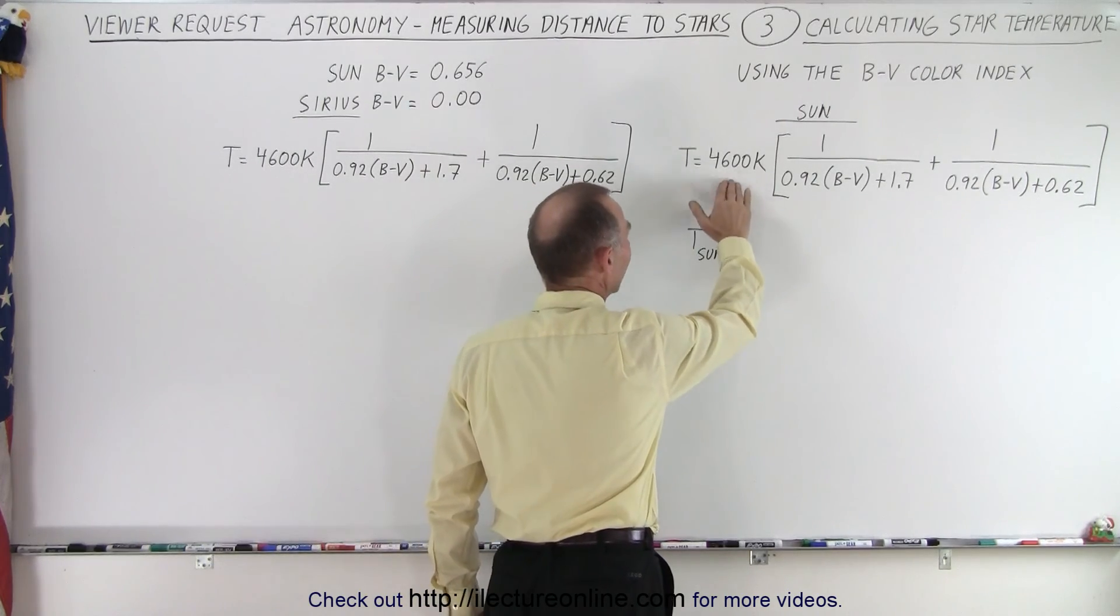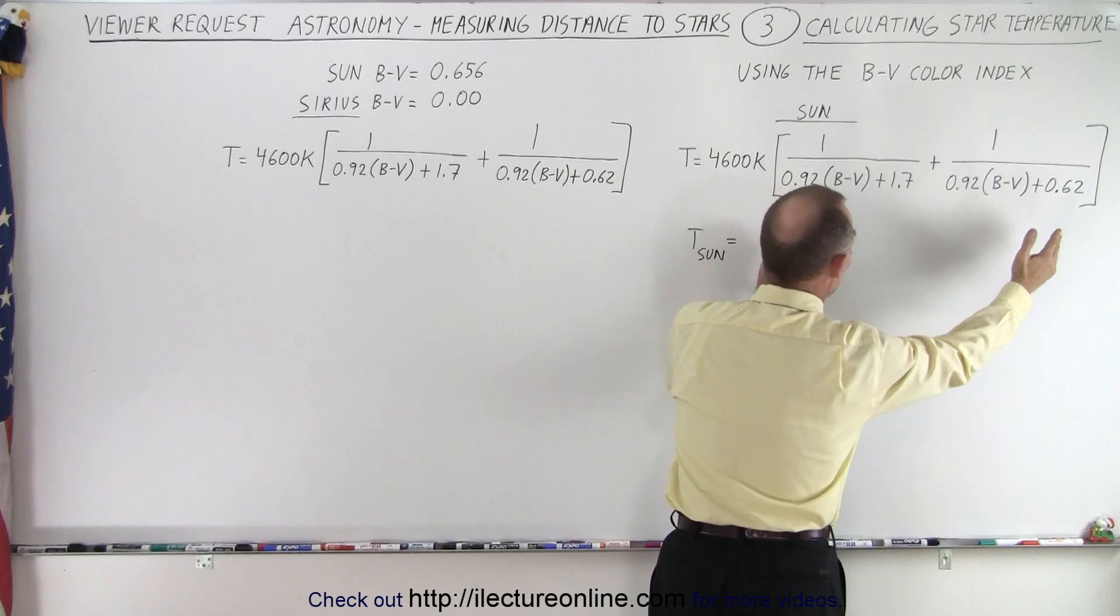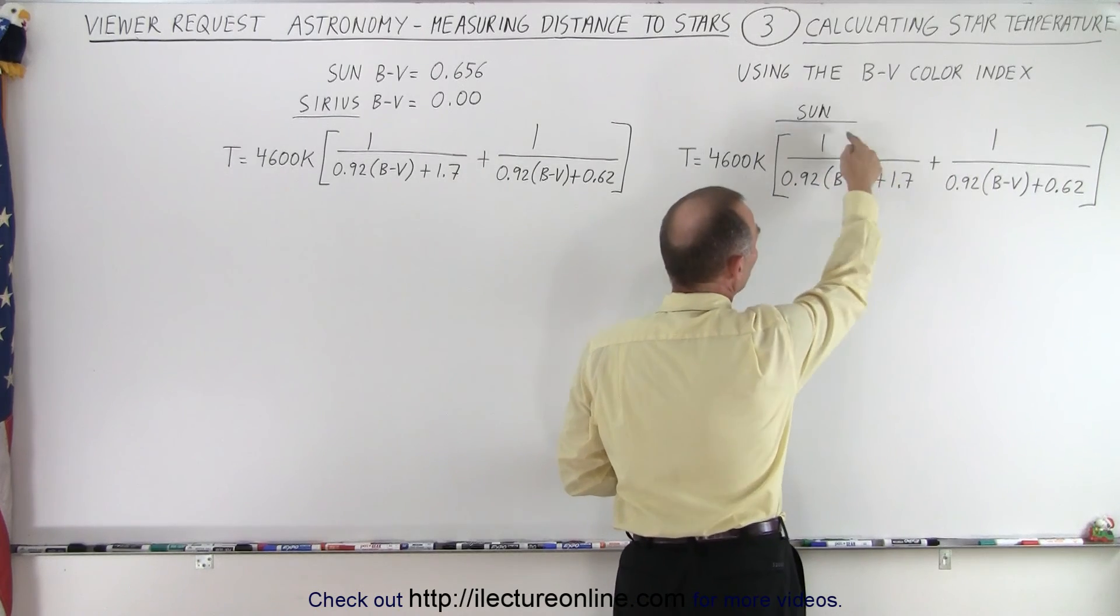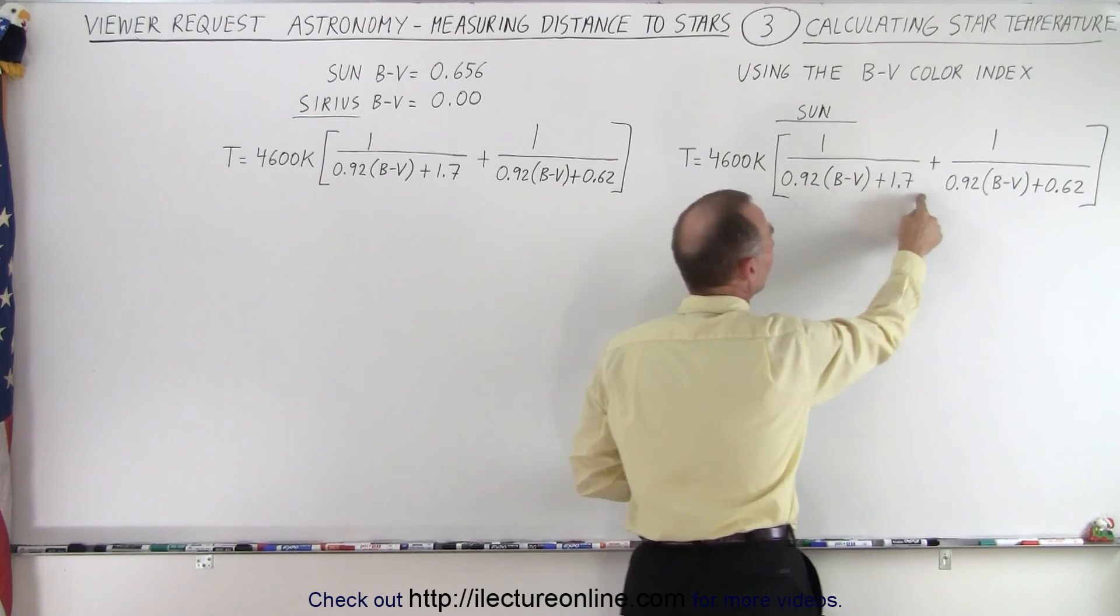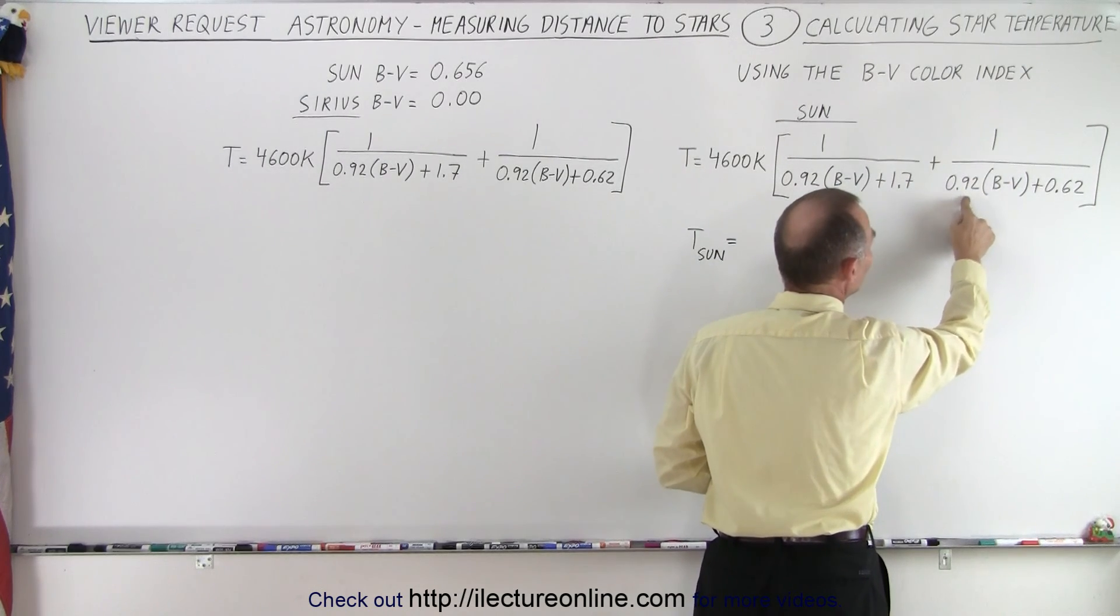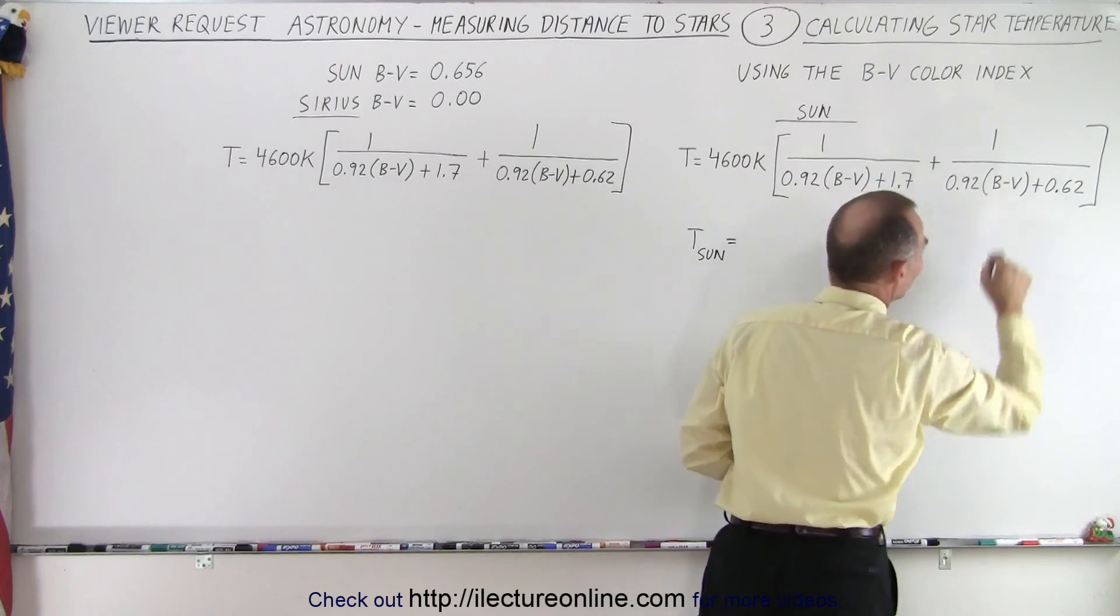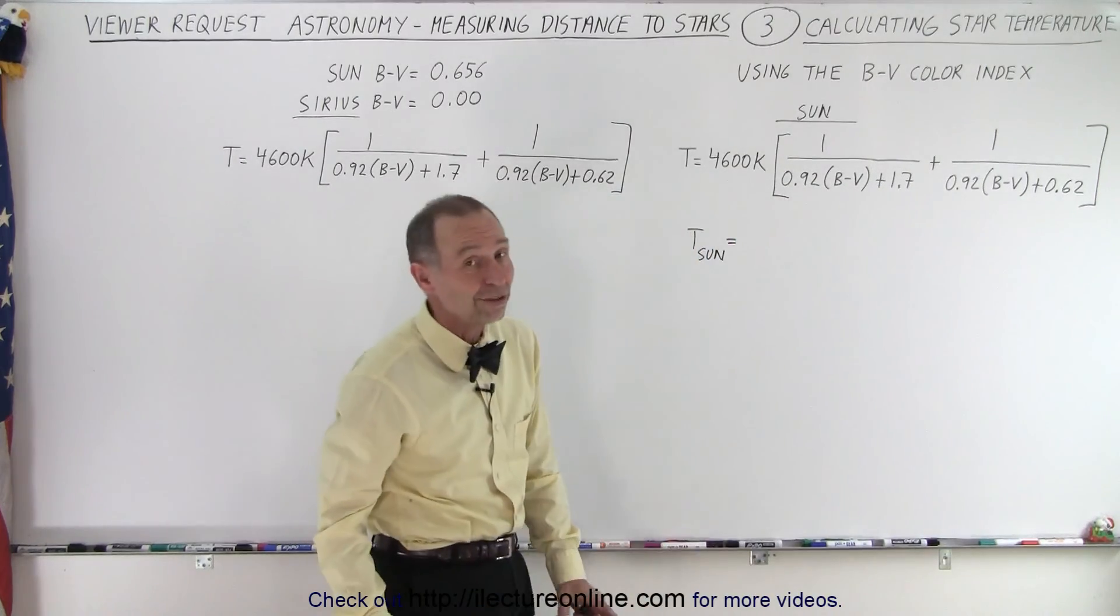It's 4600 Kelvin times what's inside the brackets and there's two fractions. It's 1 over 0.92 times the B minus V color index plus 1.7 plus 1 over 0.92 times the color index plus 0.62. It's an interesting equation, but it works.